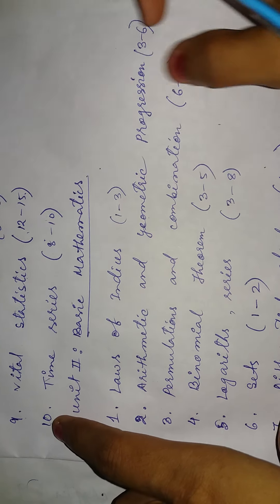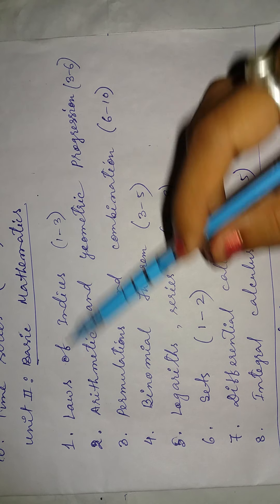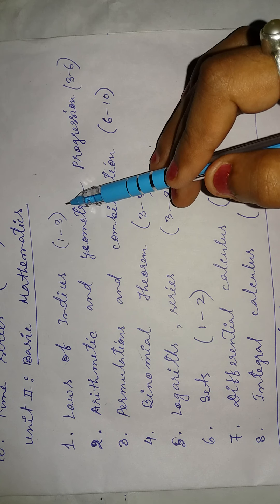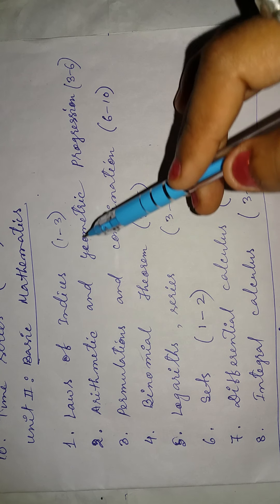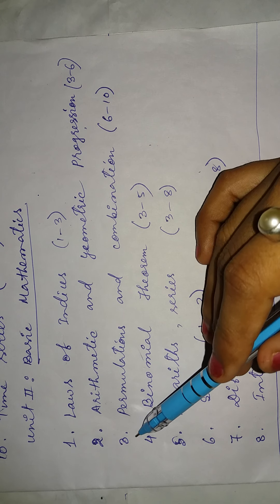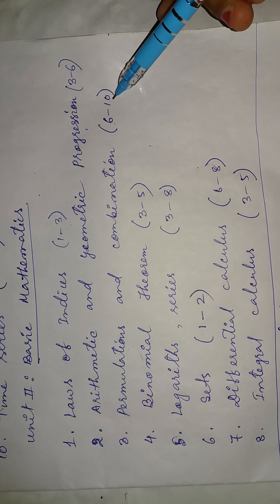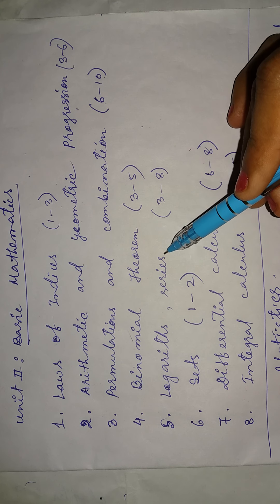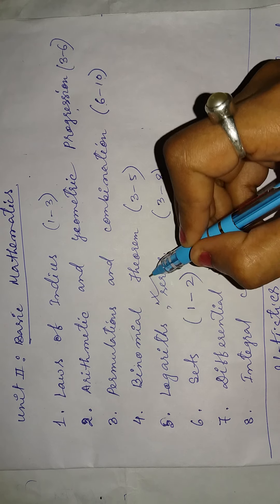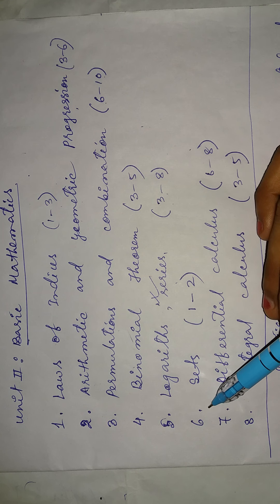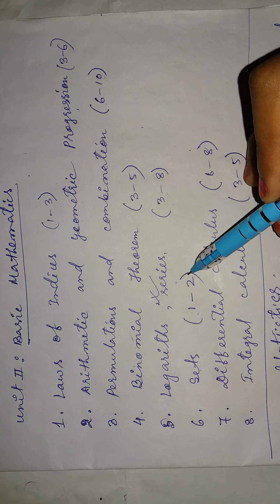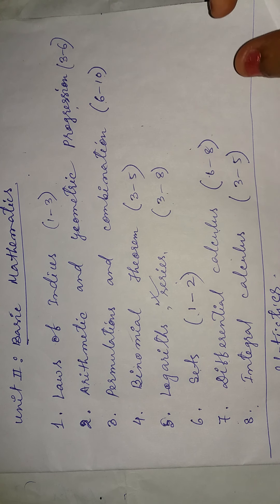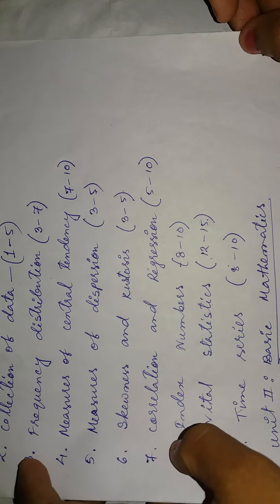Now in basic mathematics we have eight chapters. Number one is laws of indices; in the final exam you will get one to three marks from this chapter. Number two, arithmetic and geometric progression, AP and GP. Number three, permutations and combinations, six to ten marks. Number four, binomial theorem, three to five marks. Number five, logarithms and exponential series, three to eight marks. Number six, set theory, one to two marks. Seven, differential calculus, carries six to eight marks. And number eight, integral calculus, three to five marks. These are the chapters of your first year.